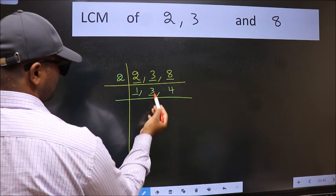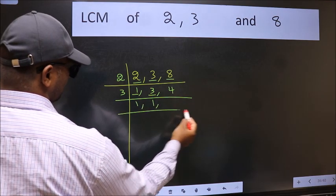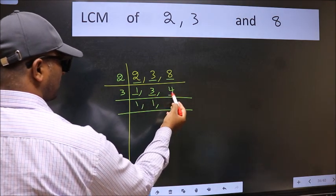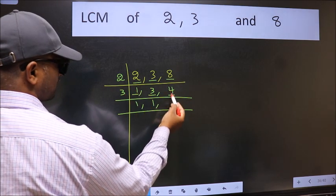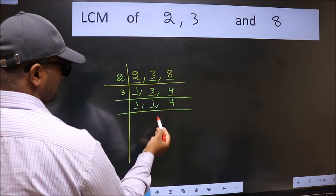So focus on the next number 3. 3 is a prime number so 3×1 is 3. The other number 4, not divisible by 3 so you write it down as it is. Now we got 1 here and here.